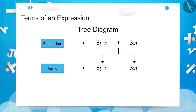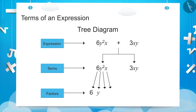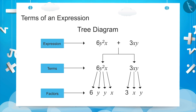In the expression 6y squared x plus 3xy, the factors of 6y squared x are 6, y, y, and x. The factors of 3xy are 3, x, and y. The coefficient of x in the first term is 6y squared and the coefficient of y is 6xy. In the second term, the coefficient of x is 3y and the coefficient of y is 3x.